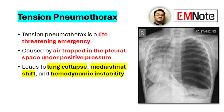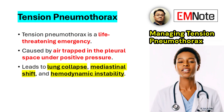Tension pneumothorax is a life-threatening condition caused by the accumulation of air in the pleural space under positive pressure. This accumulation leads to the collapse of the lung, a shift of the mediastinum, and compromise of hemodynamic stability.